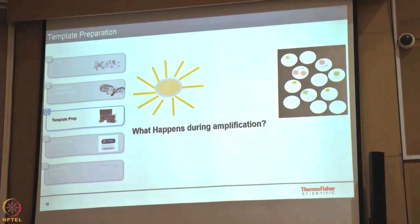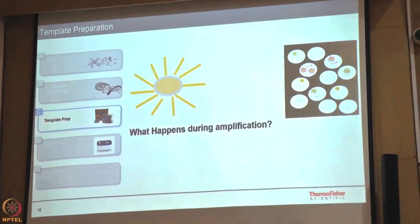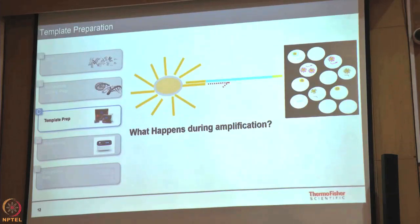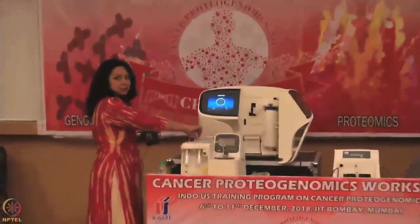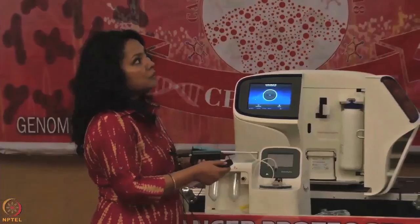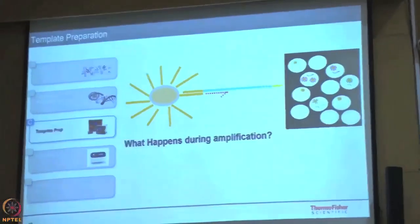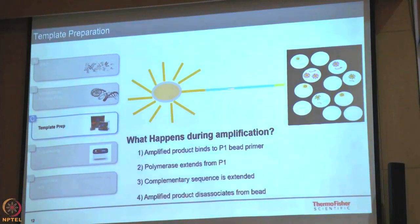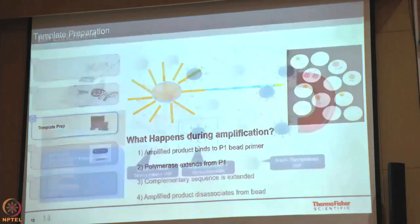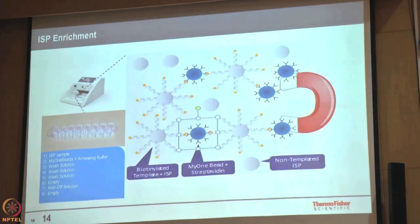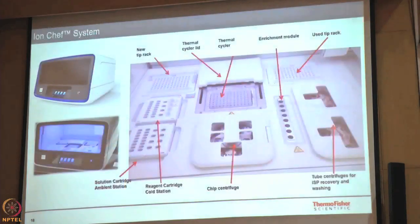This ion sphere has an oligo complementary to one of the adapters linked to the library. The library molecule is linked with an adapter on both sides, and the primer extends. This reaction on the Peltier-controlled plate forms small droplets during emulsion PCR, each working as individual PCRs. The library molecules are amplified all over the ion sphere. Then streptavidin-coated beads fish out the amplified beads from non-amplified beads. The Ion Chef fully automates library preparation and template preparation, loading chips automatically.